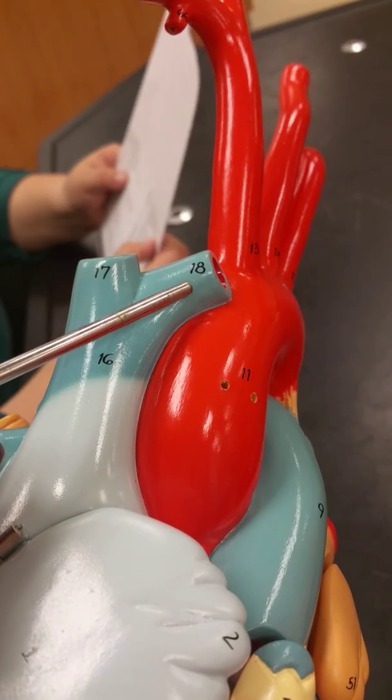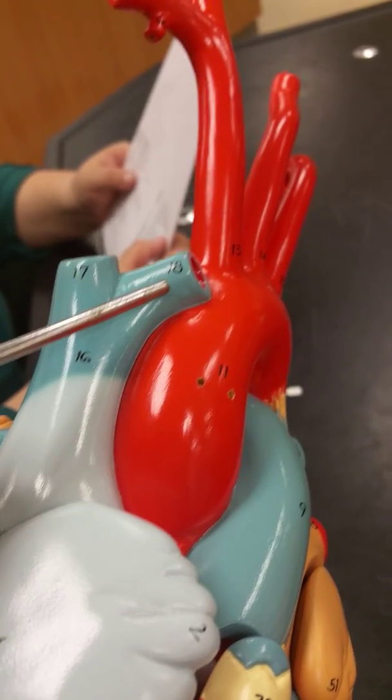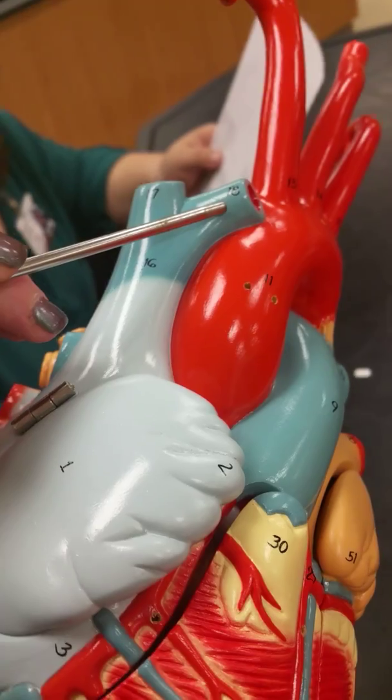18. Left brachiocephalic vein. 19. On the back, descending aorta.